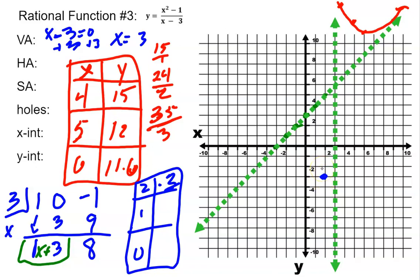If x equals 1: 1 squared is 1, minus 1 is 0. Anytime my numerator is 0, the fraction equals 0, so I have a point at (1, 0), which is my x-intercept. If x equals 0: the constants give negative 1 divided by negative 3, which is positive one-third, so I have a point at (0, one-third). And if x equals negative 1: negative 1 squared is 1, minus 1 is 0, so I also have an x-intercept at (negative 1, 0). So my graph is going to look like this.